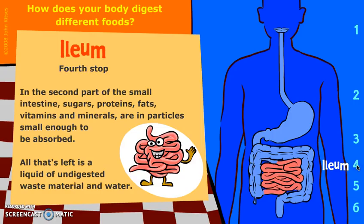Next, food moves into the ileum, the second part of the small intestine, where sugars, proteins, fats, vitamins, and minerals are all processed into particles small enough to be absorbed through the walls of the ileum and into the bloodstream. The ileum is covered with tiny finger-like projections known as villi, which cover the inside surface and increase the surface area through which nutrients are able to be absorbed into the bloodstream.